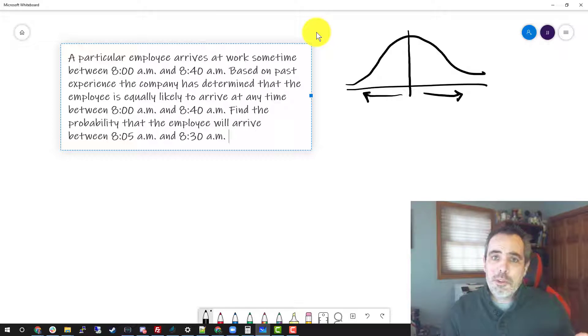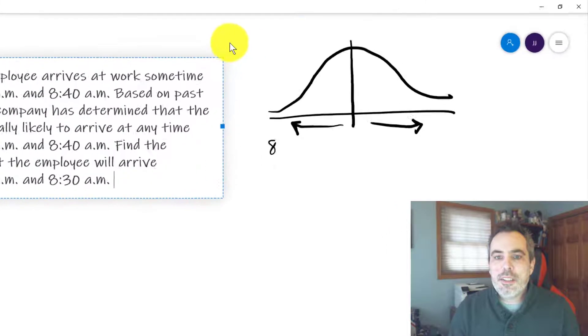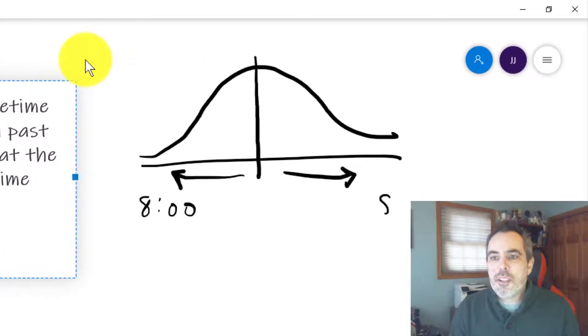A uniform distribution really means that there's an equally likely chance of everything to happen. So let's take a look at a problem to see if we can explain that a little bit. A particular employee arrives at work sometime between 8:00 and 8:40 AM.